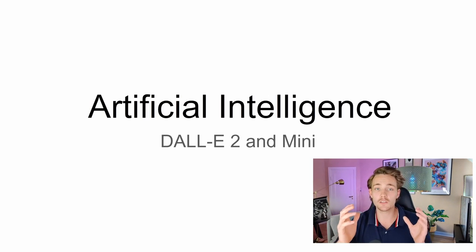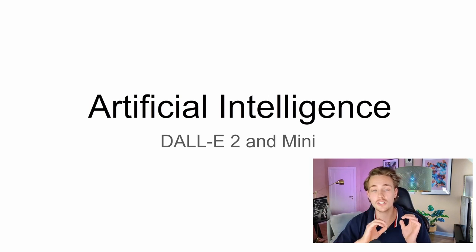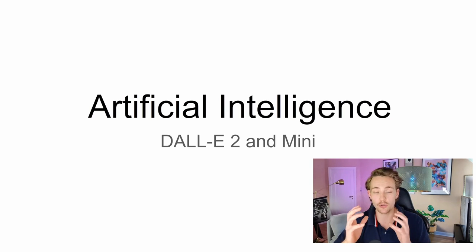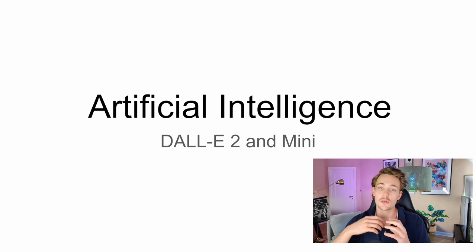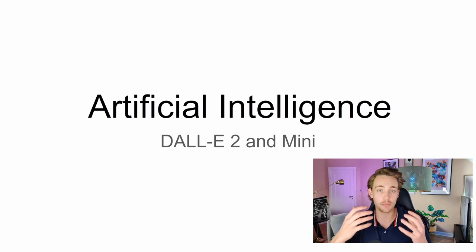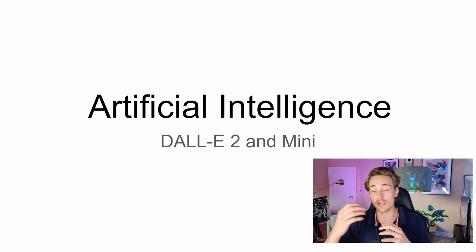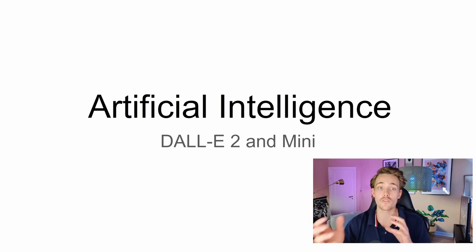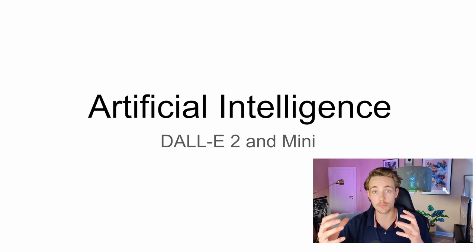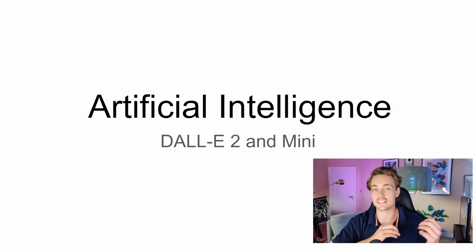Hey guys, welcome to another video on this Artificial Intelligence tutorial. In this video, we're going to talk about the DALL-E 2 and the DALL-E mini model. We're actually going to talk about the architecture — how the DALL-E 2 model is built up. This is the state-of-the-art neural network within deep learning, showing how we go from text to actually generate images from the text we pass into the model.